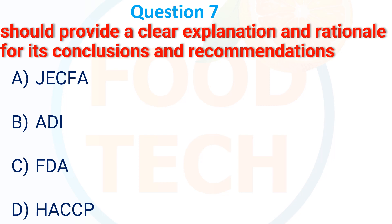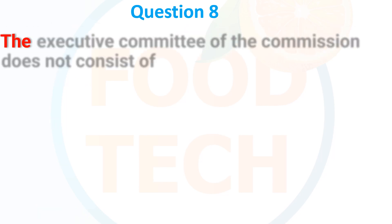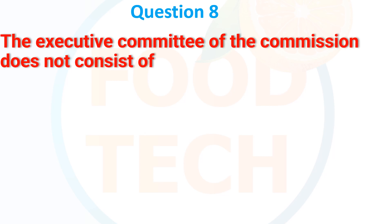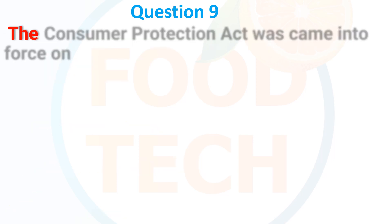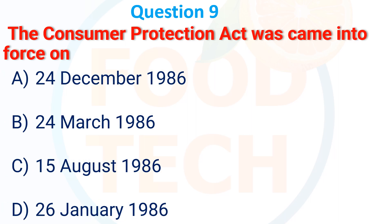The Executive Committee of the Codex Commission does not consist of: A. Chairperson, B. Regional Coordinator, C. Advisor to Member, D. Secretaries. The answer is D. Secretaries.